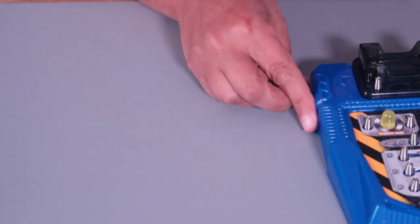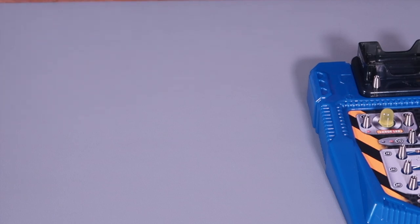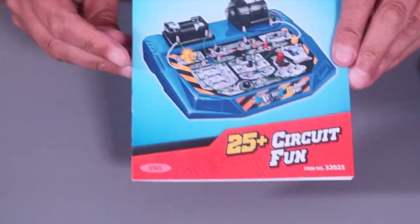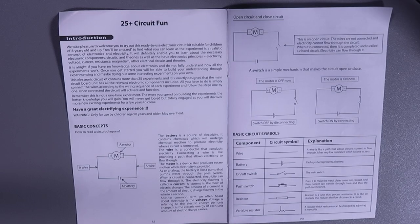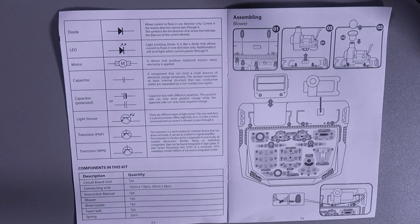As well as the circuit board, there's just a few other items. It comes with a small instruction booklet which starts off by explaining electronic components.